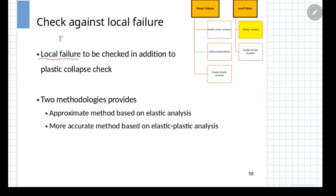For example, if you are considering a nozzle to shell junction, in plastic collapse check you will consider failure at an entire section. If this is the geometry of nozzle to head junction, you will consider failure of a complete cross section in plastic collapse check.